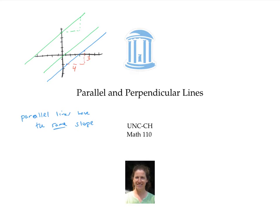Suppose we want to find a line perpendicular to our original line with its slope of three fourths. A perpendicular line — a line at a 90 degree angle to our original line — will have a slope that's the negative reciprocal, the opposite reciprocal of our original slope. So we take the reciprocal of three fourths, that's four thirds, and make it its opposite by changing it from positive to negative. Perpendicular lines have opposite reciprocal slopes.